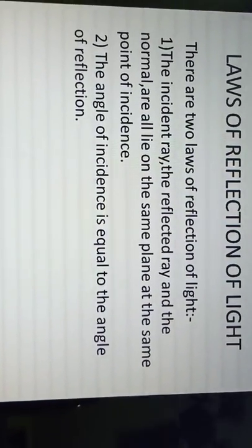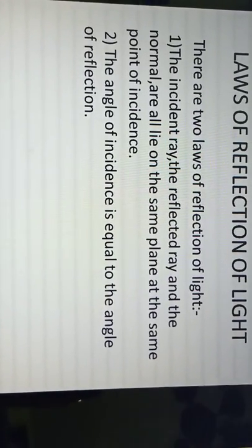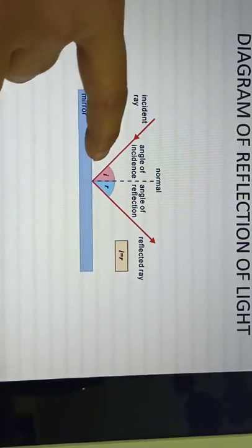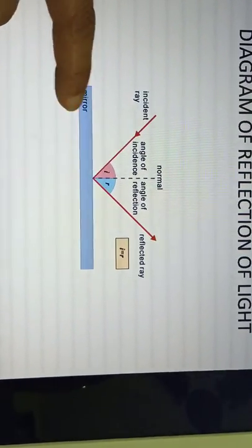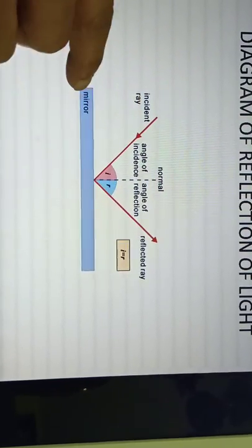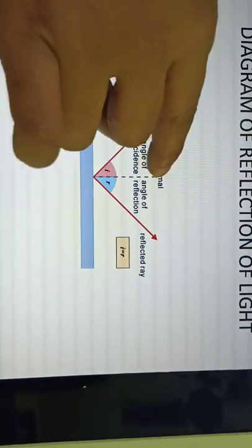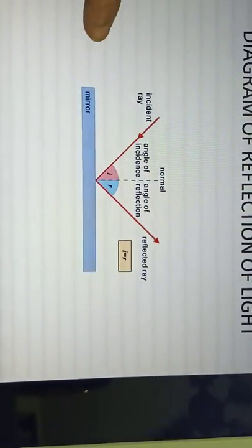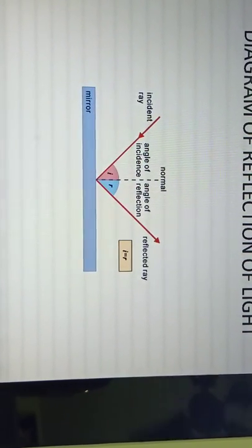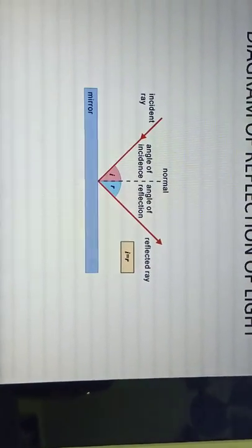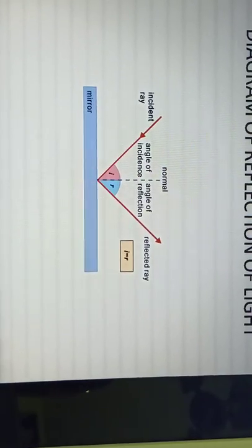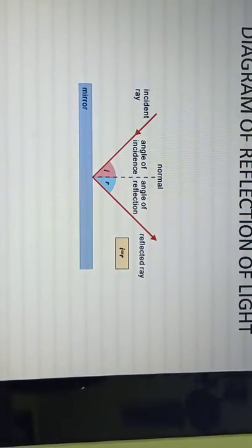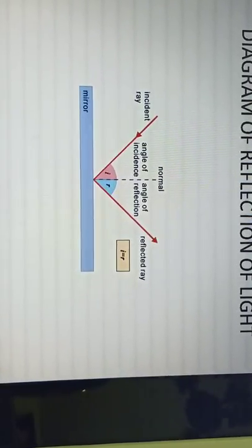There are two laws of reflection of light. Looking at this slide — the incident ray is the ray that comes from the object. When the incident ray strikes the mirror surface, it is reflected back. The normal is an imaginary line that falls at 90 degrees on the mirror. The first law states that the incident ray, the reflected ray, and the normal all lie on the same plane at the same point of incidence. The second law states that the angle of incidence is equal to the angle of reflection — I equals R.